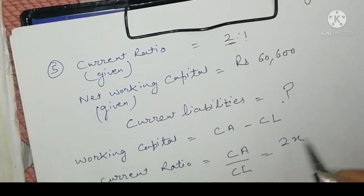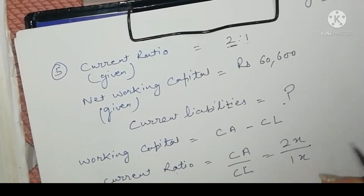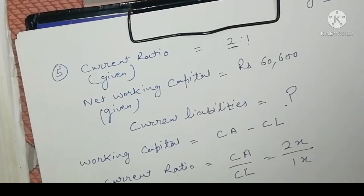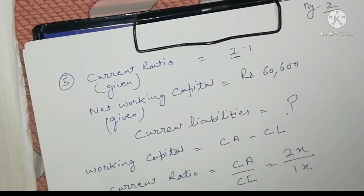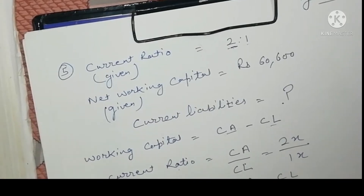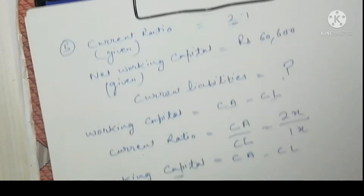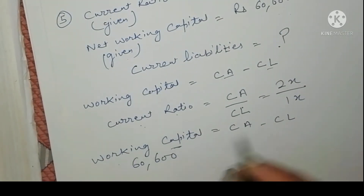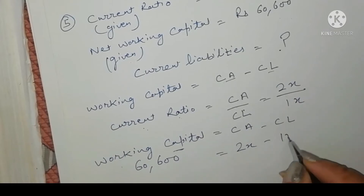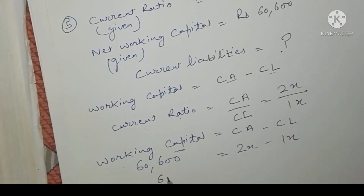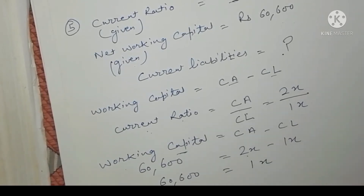In the current ratio 2:1, the 2 represents current assets and 1 represents current liabilities, so we write it as 2x upon 1x. Working capital equals CA minus CL, so we put the values into the formula: 60,600 equals 2x minus 1x. After solving this equation we get x equals 60,600.